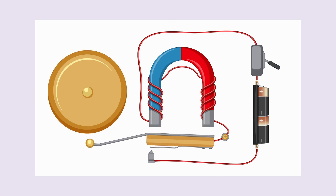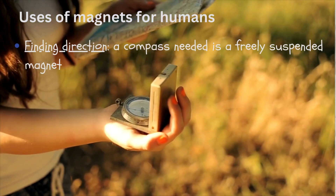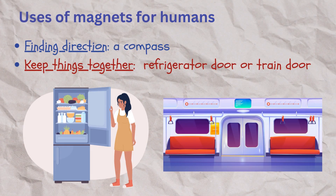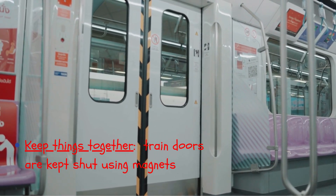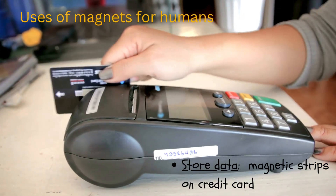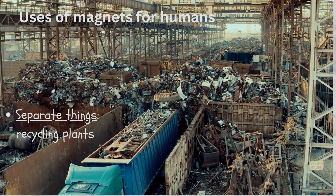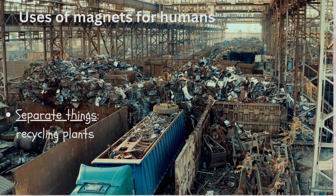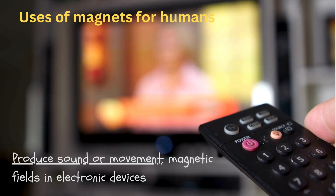Magnets have many helpful uses for humans. For centuries we've used magnets to find our way — the needle in a compass is a magnet. Magnets keep things together, like the refrigerator door or train door. We store information with magnetic strips on our credit cards and smartphones. We use magnets for recycling, as a conveyor belt can separate magnetic and non-magnetic materials.